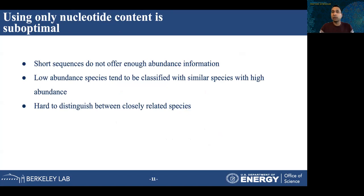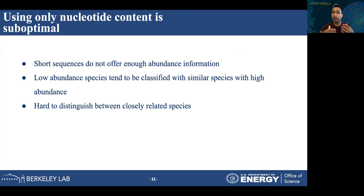However, it has been proven that using only the contents of the read for classification is sub-optimal. Short sequences often do not have enough content information or enough abundance information to perform classification with high accuracy. Moreover, the profile of metagenomic datasets is complicated — there can be highly abundant species alongside species with low abundance, and it becomes much harder to distinguish between two similar species appearing with very different abundance profiles. It is also often hard to distinguish between closely related species using content alone.